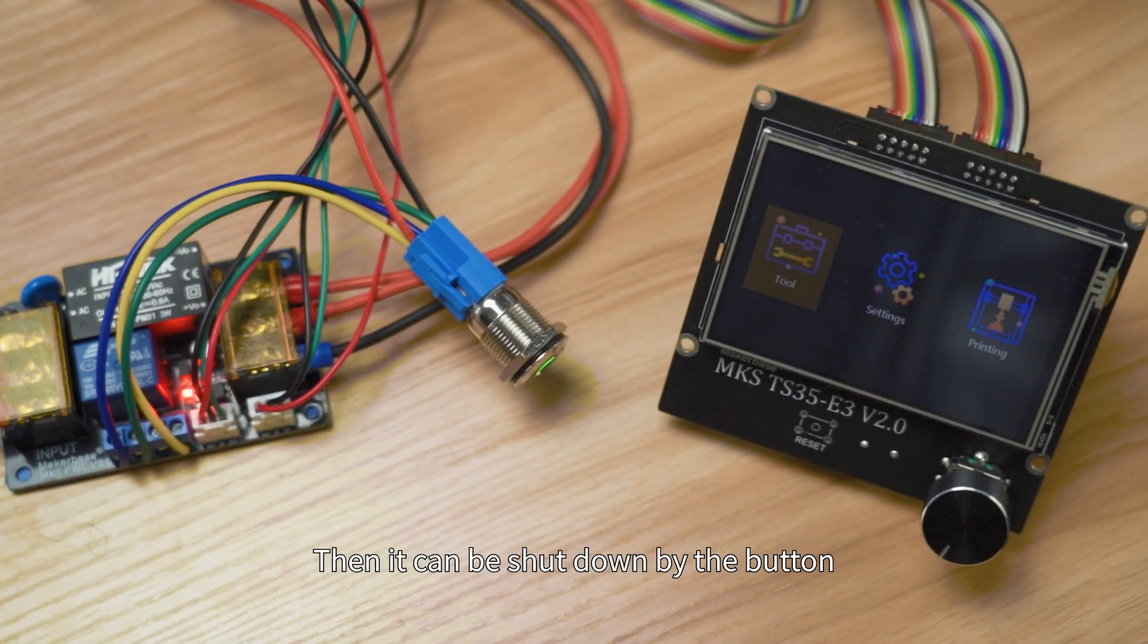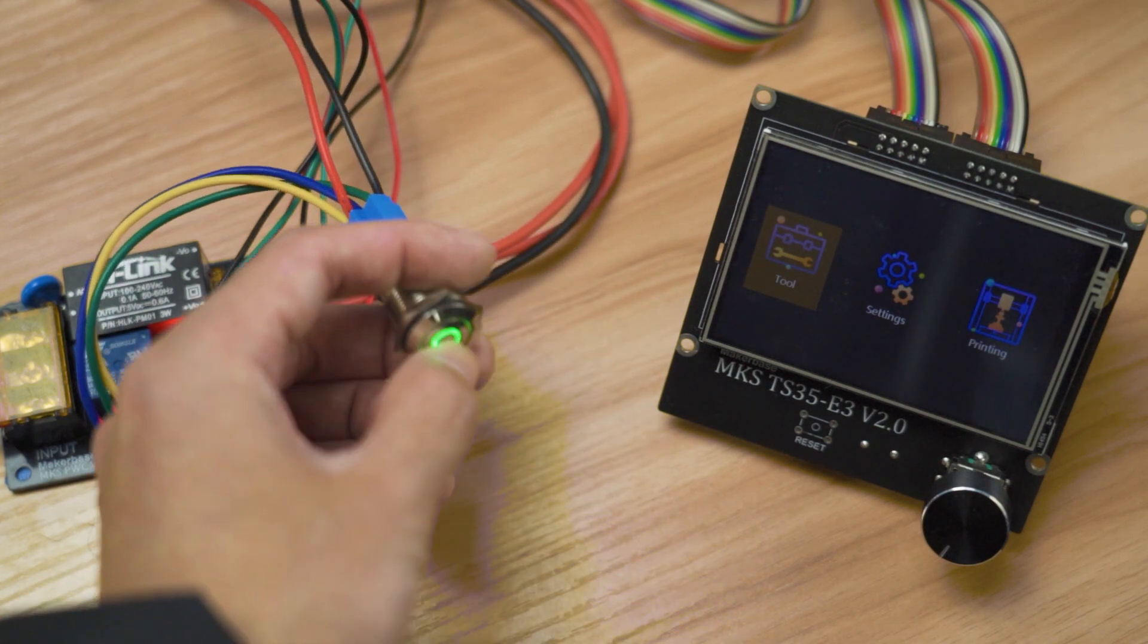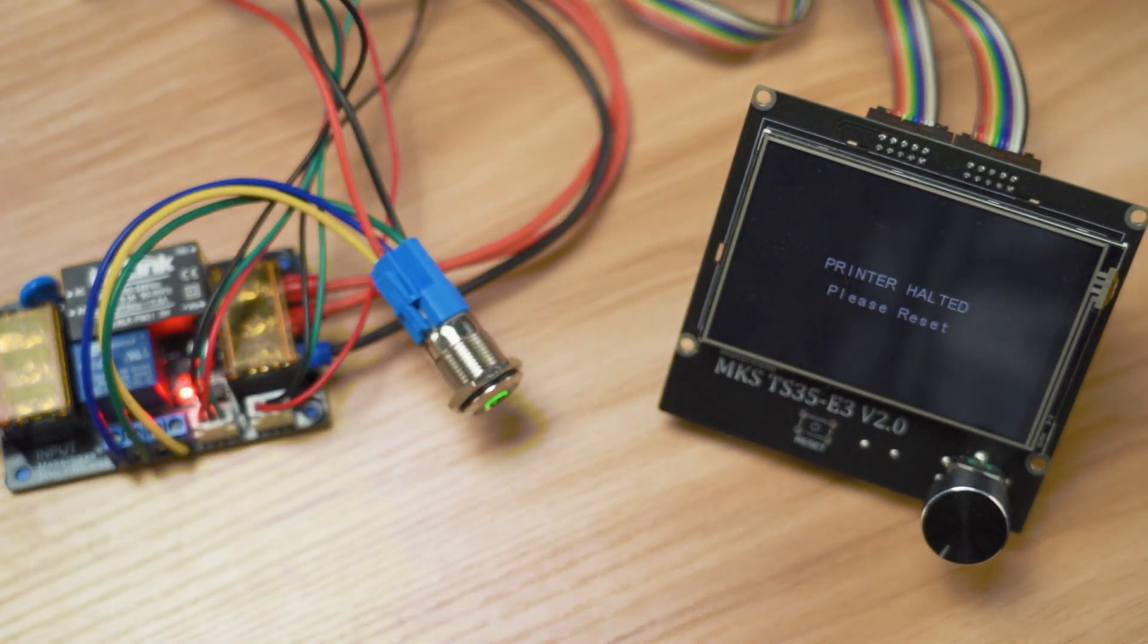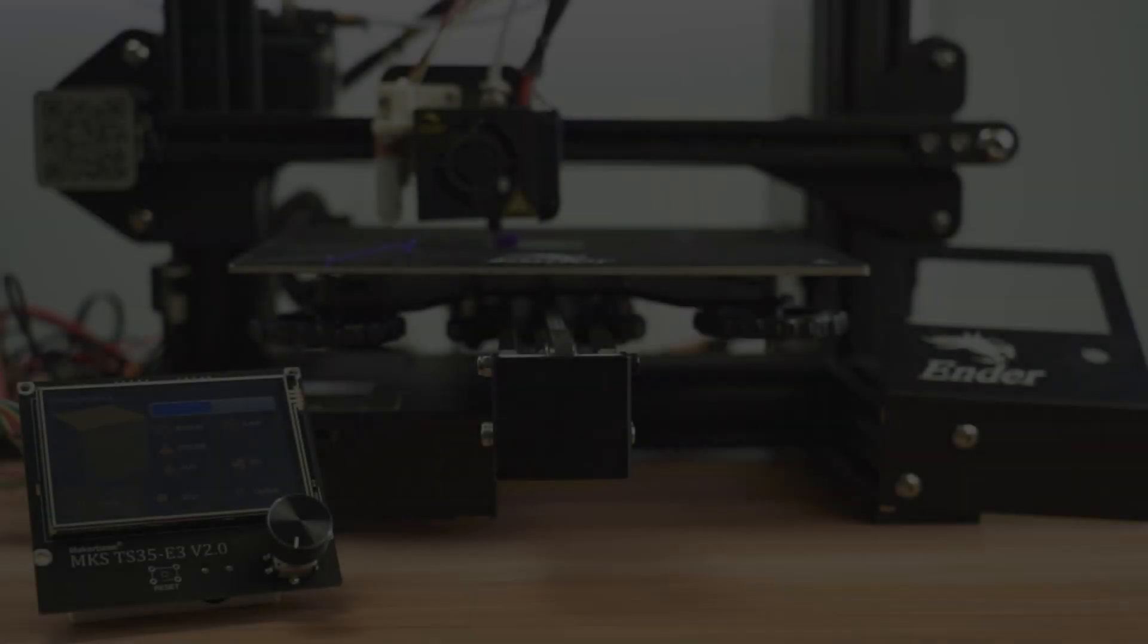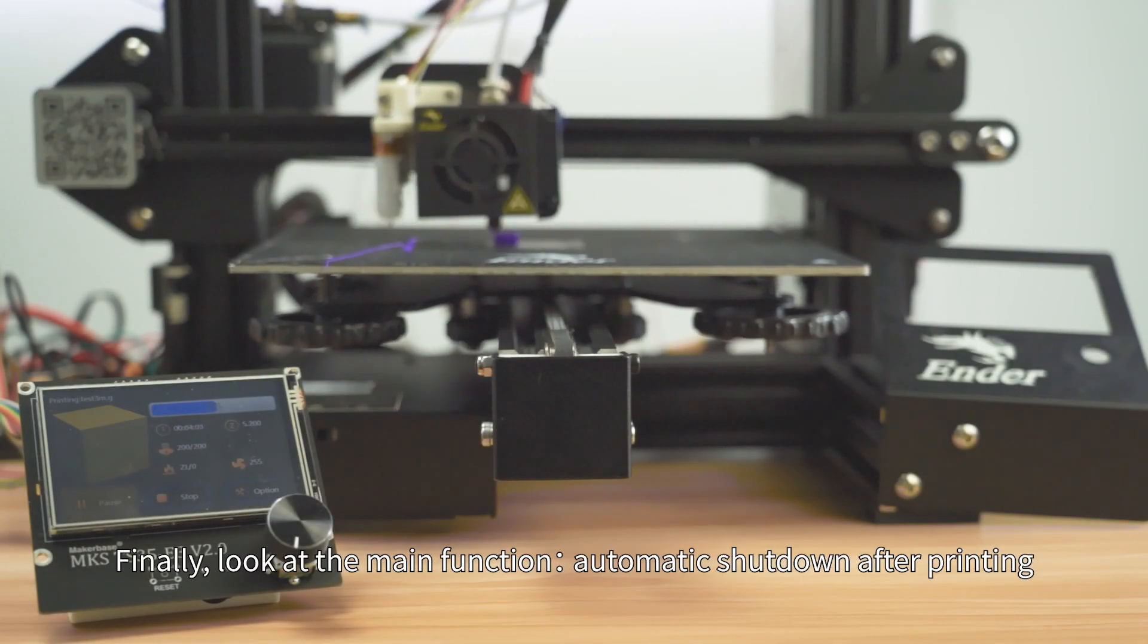Then it can be shut down by the button. Finally, look at the main function: automatic shutdown after printing.